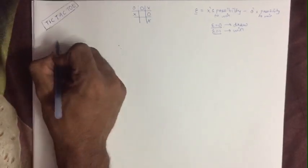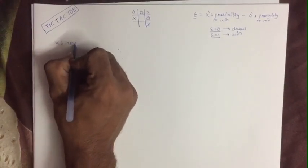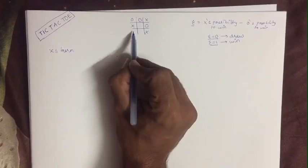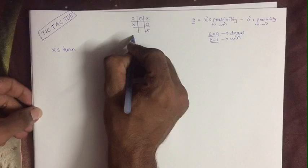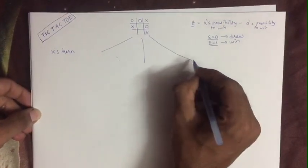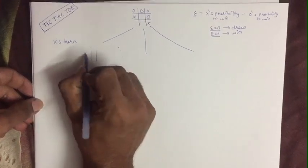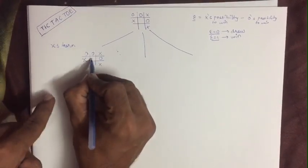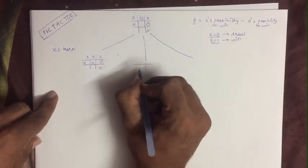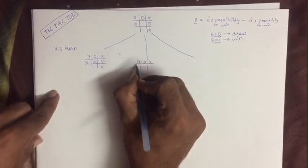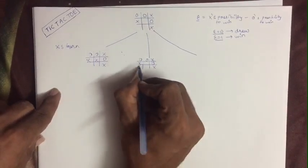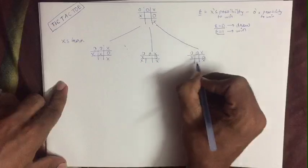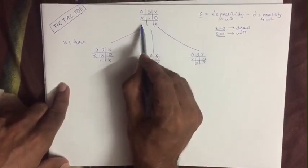So now it is X's turn. X can be placed in 3 positions: over here 1st, over here 2nd, and over here 3rd. So you have to generate possibilities 1, 2, and 3. First I will keep X over here, second I will keep over here, and in third I will keep over here. So these are the 3 possibilities: 1st, 2nd, and 3rd.